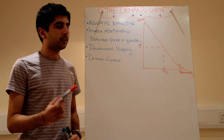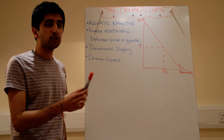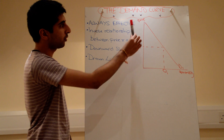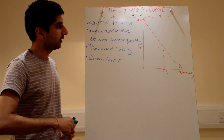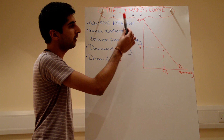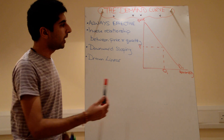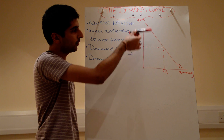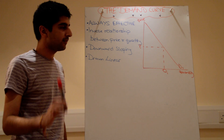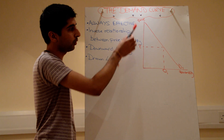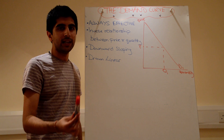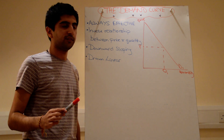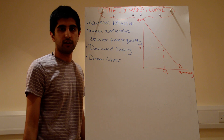Therefore, when it comes to drawing a demand curve and demonstrating this relationship between price and quantity, the curve will slope downwards. We've got price on the y-axis and quantity on the x-axis. Naturally, to show an inverse relationship, the curve must slope downwards. We also draw it linear just to simplify the law of demand relationship; in truth it is a curve, but we don't need to draw it as a curve to show the basic idea.